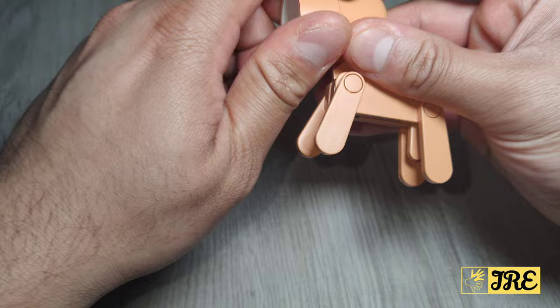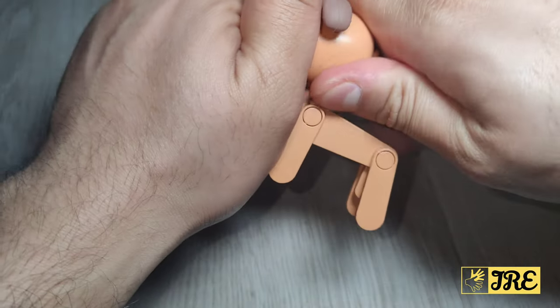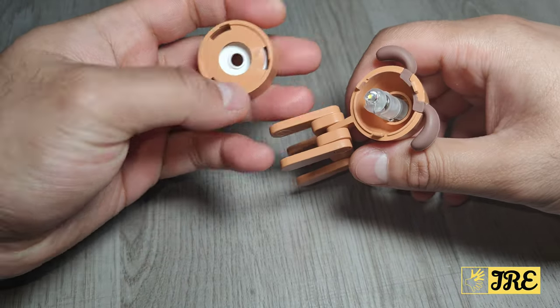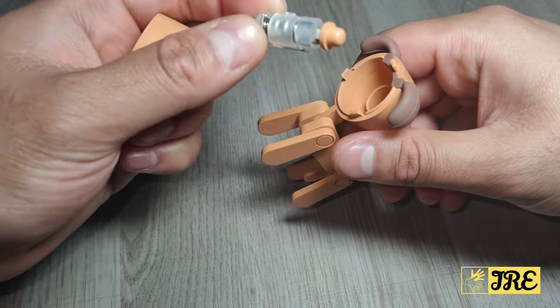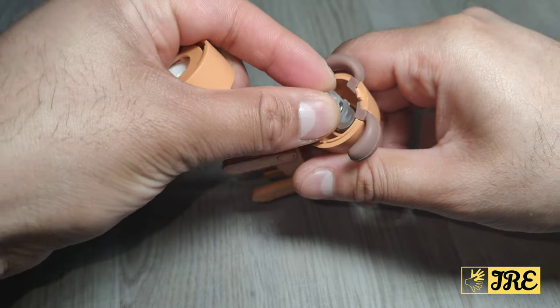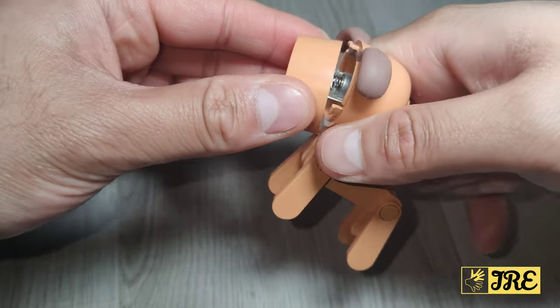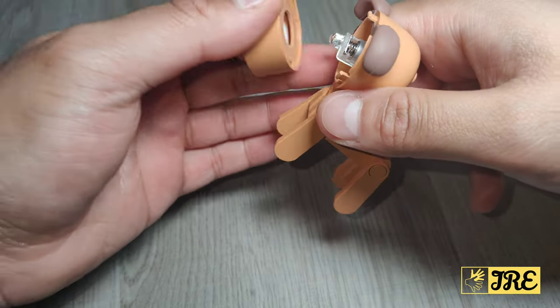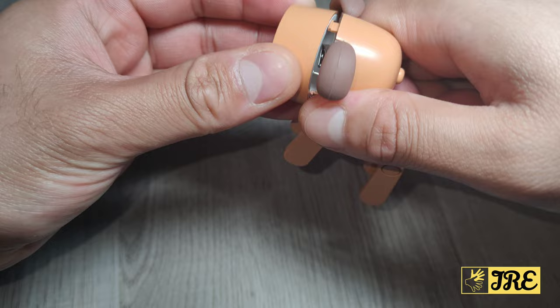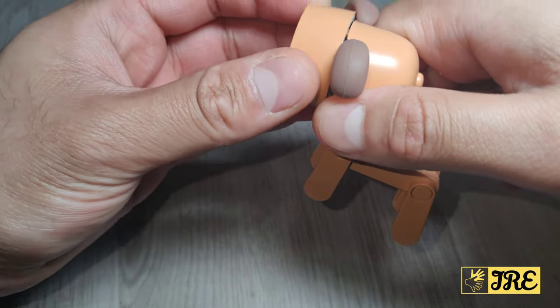If you want to change the batteries, all you have to do is twist this open and the battery goes in here, then just put that back in again and close that. That's it.